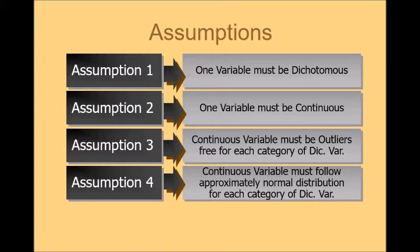Assumption four is continuous variable must follow approximately normal distribution for each category of dichotomous variable. So in assumption four, you have to ensure that your continuous variable is normally distributed or have approximate normal distribution for each category of dichotomous variable.